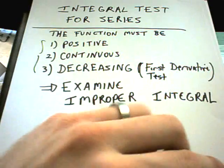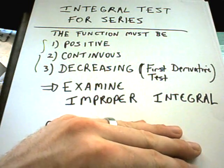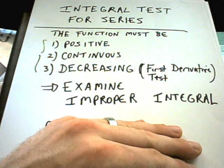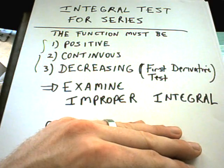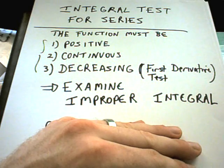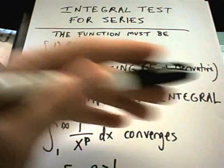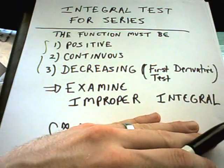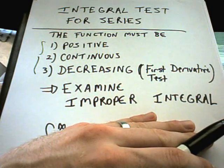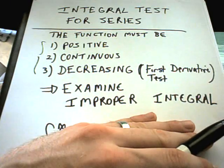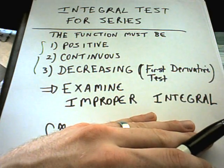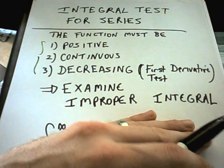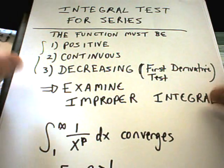Once your function passes those three criteria, you have to look at the improper integral itself. Remember, improper integrals are the ones that go from one to infinity, or five to infinity — in our case the lower limit will always be a finite number. If the improper integral converges, the original series also converges; if the improper integral diverges, then the series itself diverges.